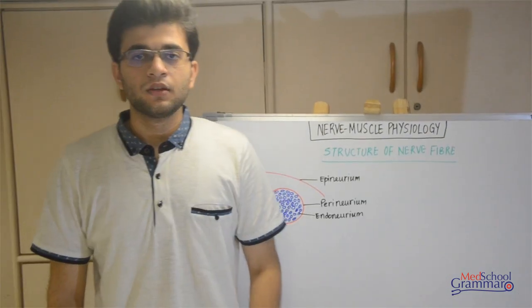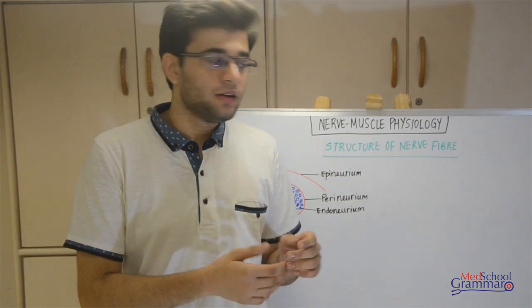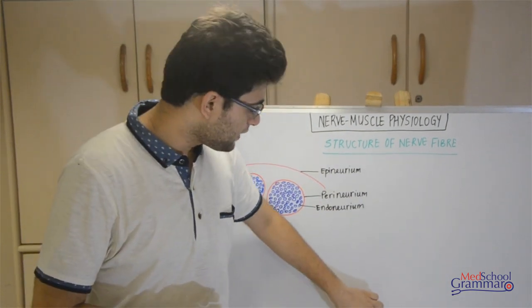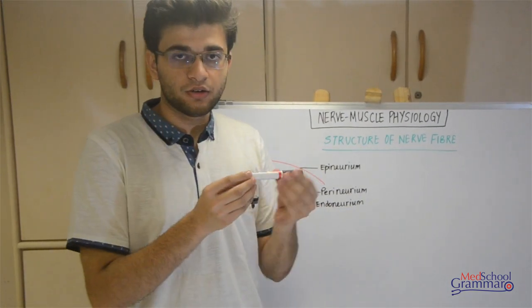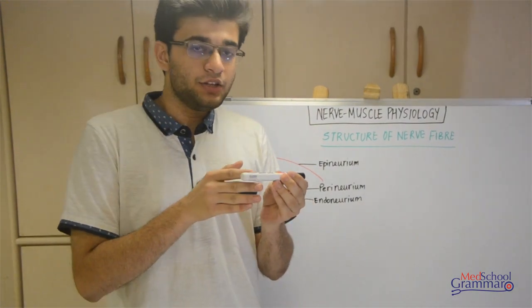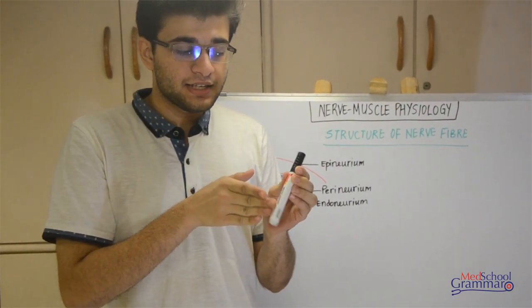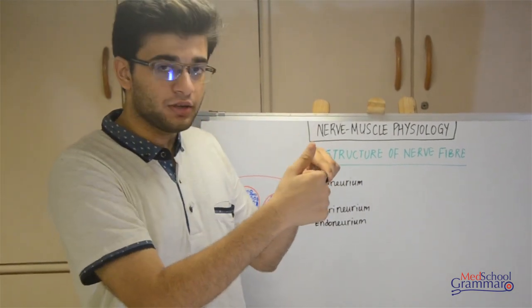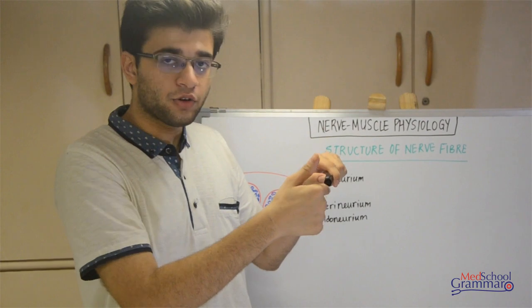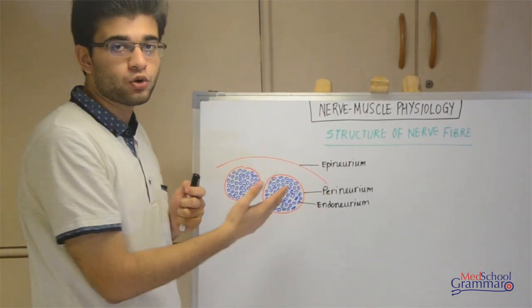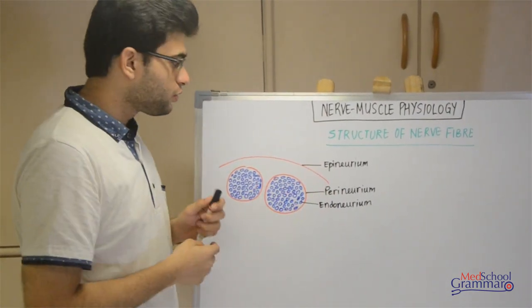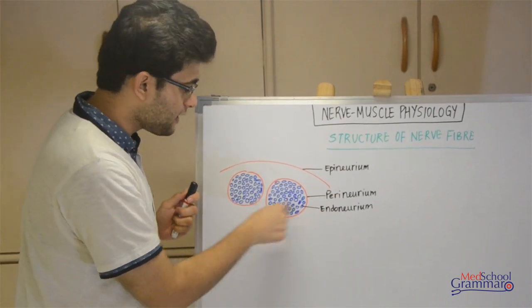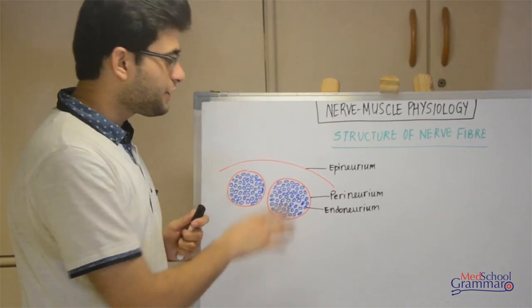Beginning with the structure of the nerve fiber, let's understand how it looks. If this is a nerve trunk, you take a transverse section — you cut it and look from here — and this is how a nerve trunk would look. There is an outer part and an inner part.